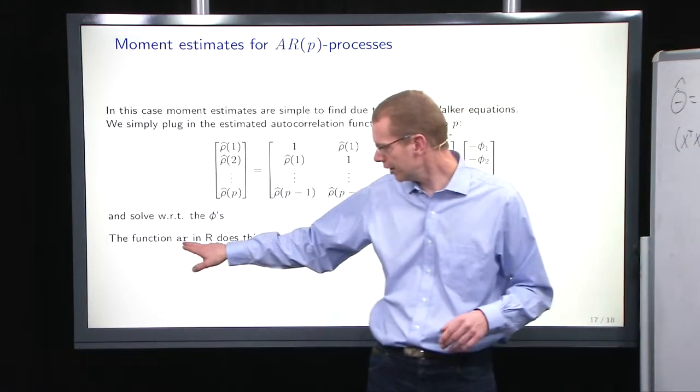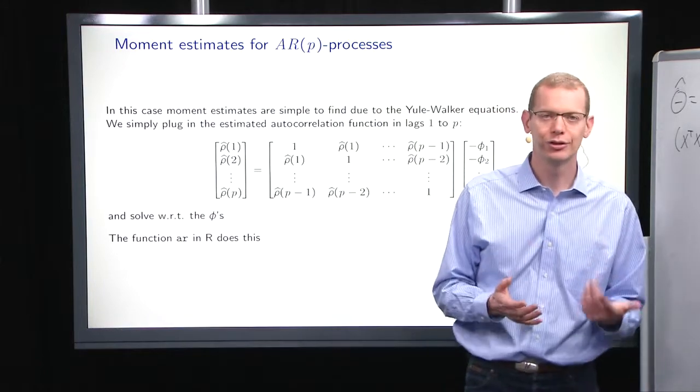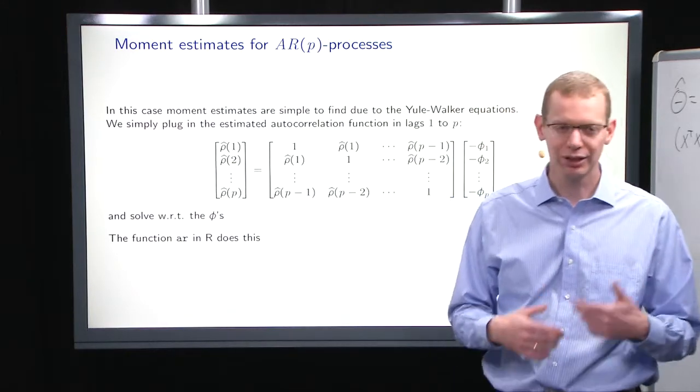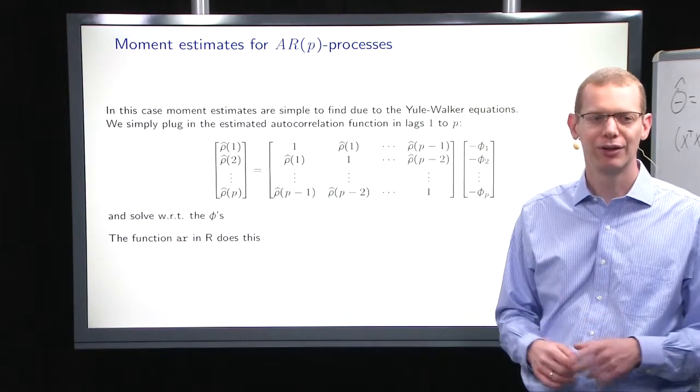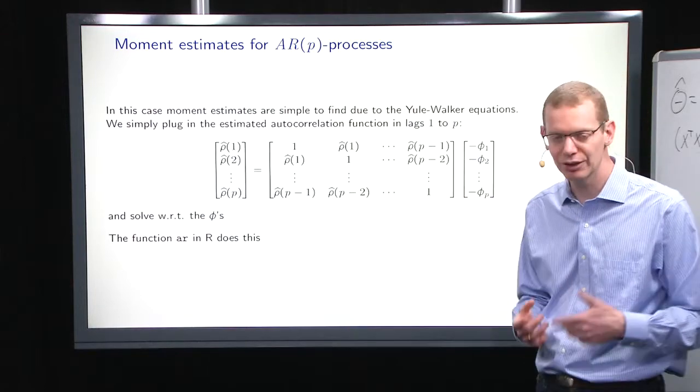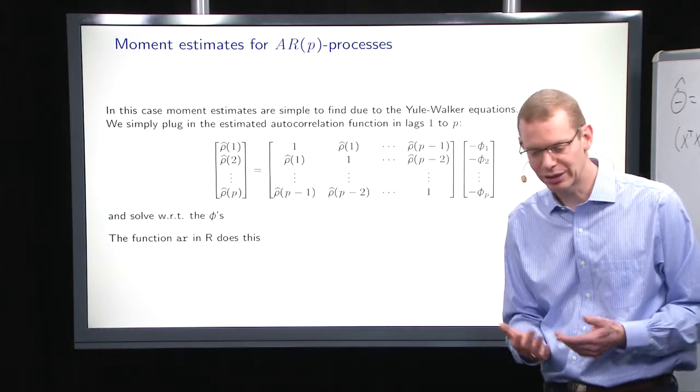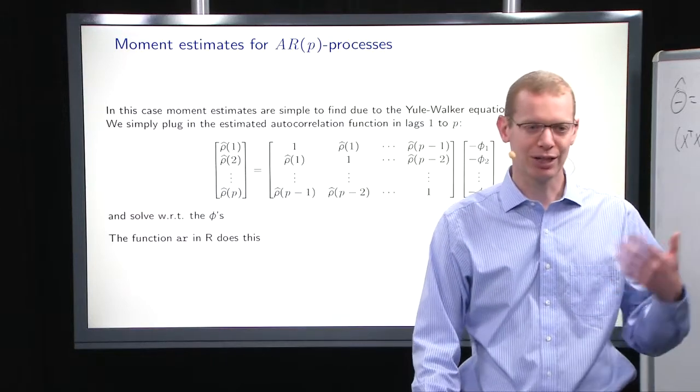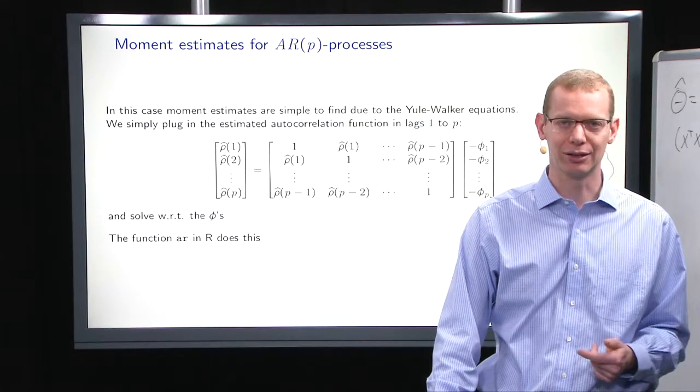In R, you have the function AR that, per default, uses the Yule-Walker equations to get an estimate. But remember, the properties are not as well-established and well-documented as when you use the least squares estimator or the maximum likelihood estimator.